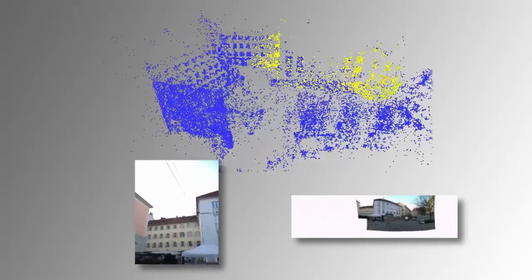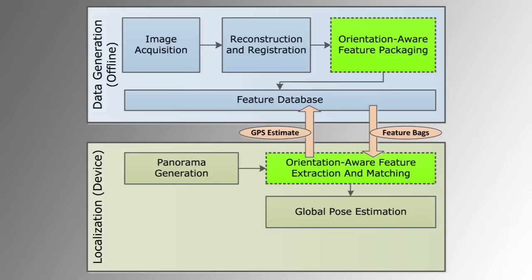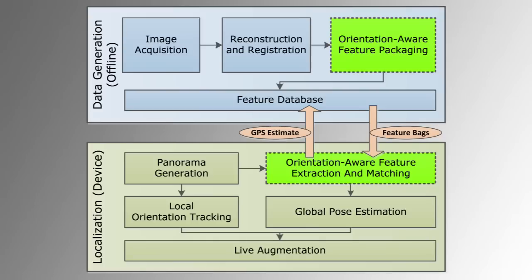Then, we extract features from the panorama and match them against the features collected in the corresponding orientation bin. The established correspondences are used to estimate a global pose, which is combined with the local orientation estimate of the panorama. The obtained dynamic 6-degree-of-freedom pose is used in our augmented reality applications.